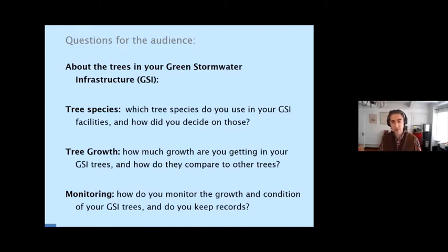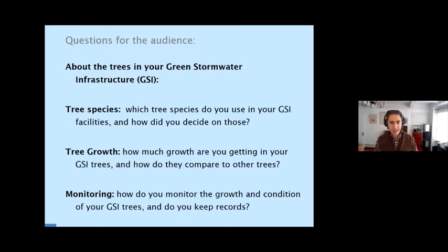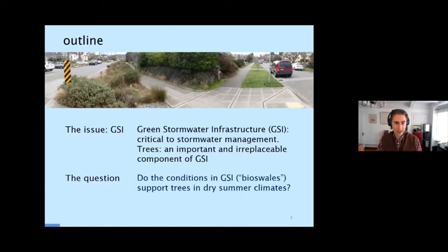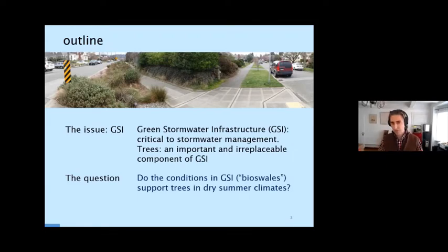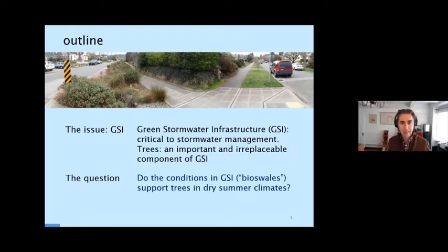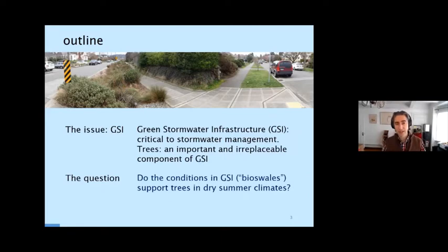After this introduction, let's talk about what we're covering: green stormwater infrastructure. On this slide you can see a good example on the left-hand side — this is a typical example, and we'll talk more about what this involves. We have more and more of these facilities, and they're often replacing our standard green strip the way those used to be constructed in the past. The question I've tried to answer is: do the conditions in these green stormwater infrastructure facilities support tree growth, especially in climates that have a dry summer?